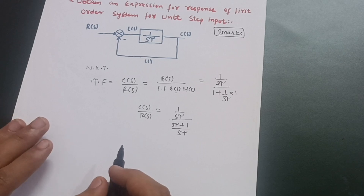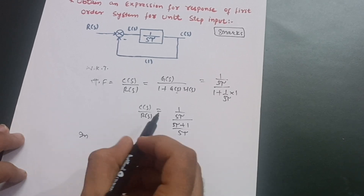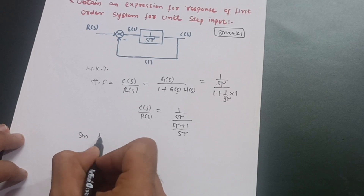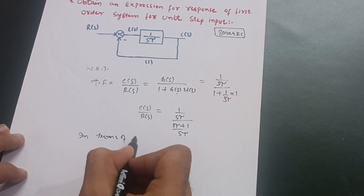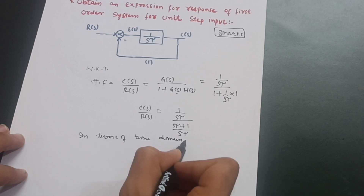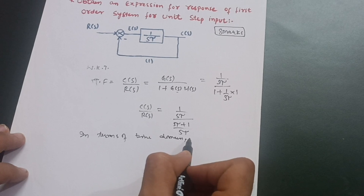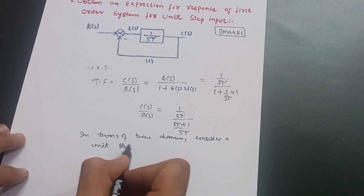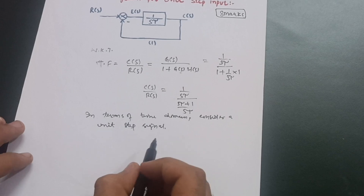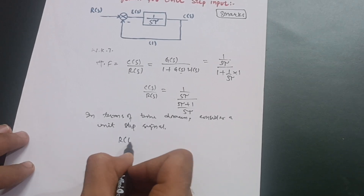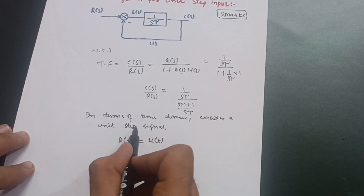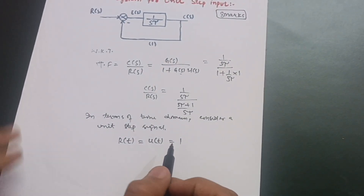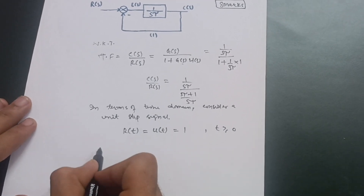Now, taking this into the time domain — C(S) corresponds to C(T) and R(S) to R(T). For a unit step signal, R(T) = U(T) = 1, for T ≥ 0. Taking the Laplace transform, R(S) = Laplace of R(T) = Laplace of 1, which equals 1/S.